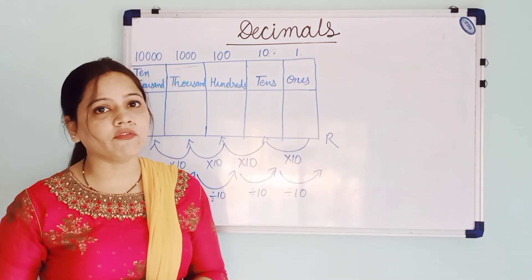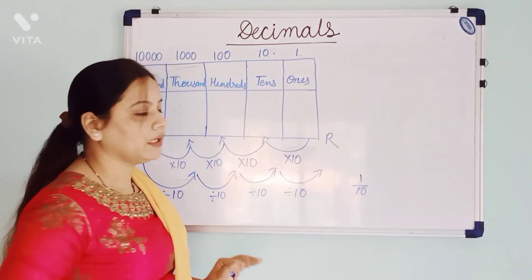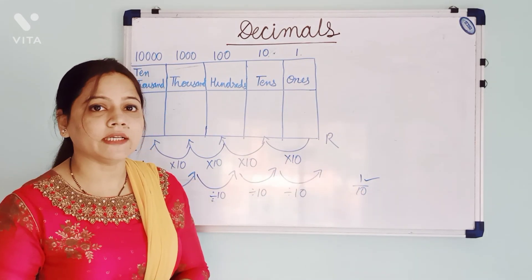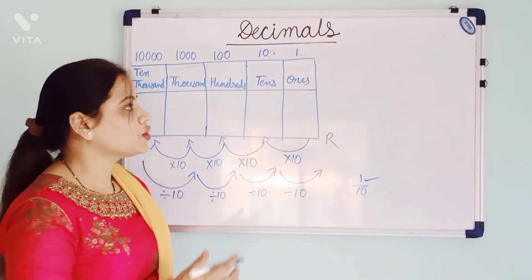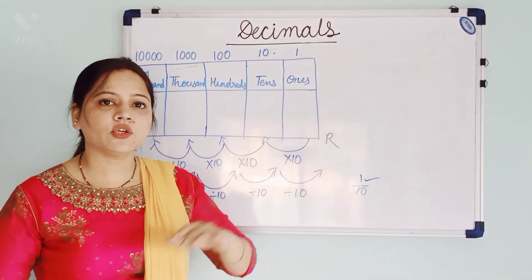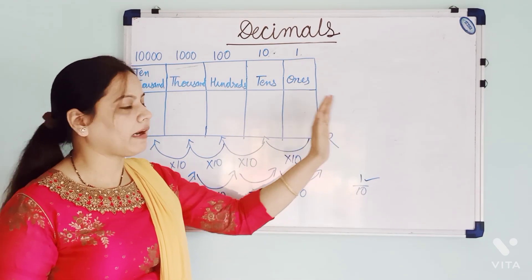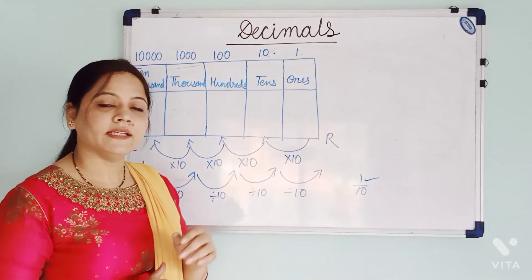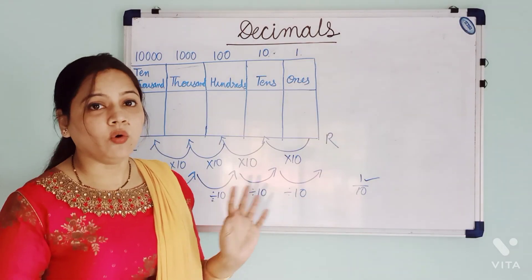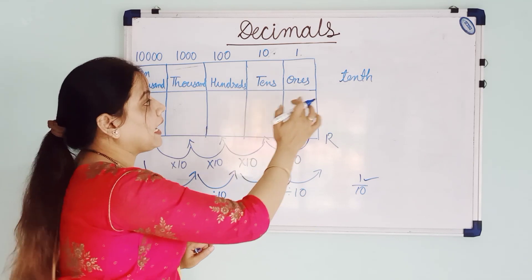As I showed you in the beginning of the video, I have written one-tenth of the apple. Now, what is the place value of this one-tenth? It is smaller than one — smaller than 1's position — so it should go at the right side. To know the place value that just comes after the 1's place on the right side, we divide by 10. If we divide 1 by 10, we get 1 by 10, which is one-tenth. So the next place value will be 10ths. Here I have written 10s on the left and this is 10th on the right.